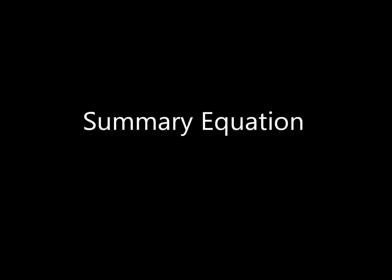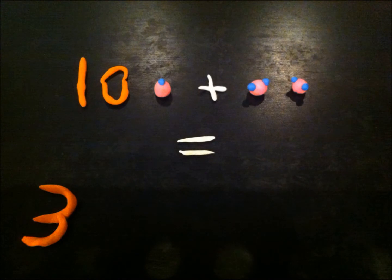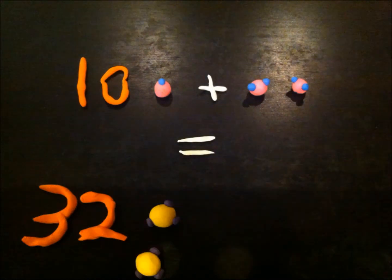Summary equation: 10 NADH plus 2 FADH2 produces 32 ATP and 6 water molecules.